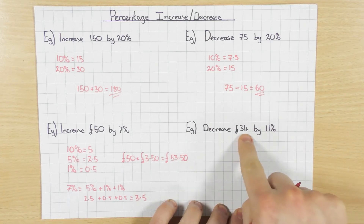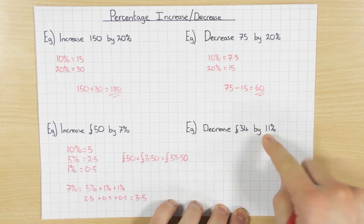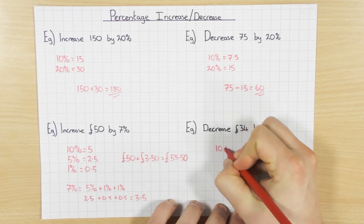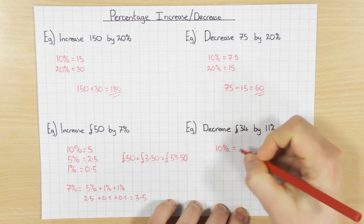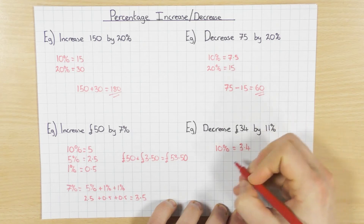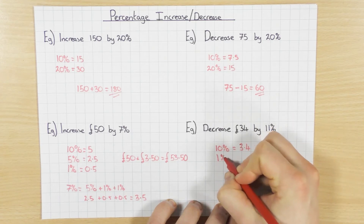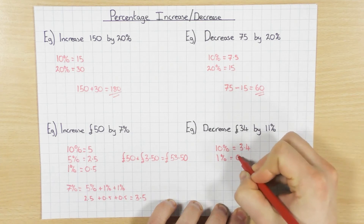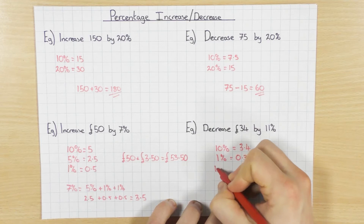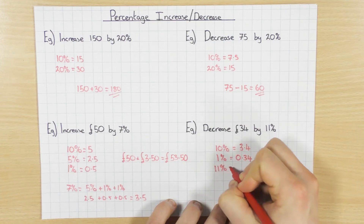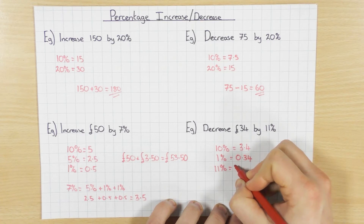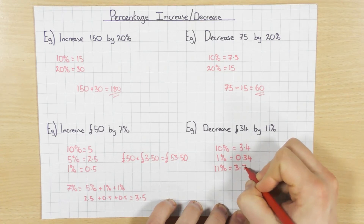Next one — this time I'm going to decrease £34 by 11%. So we need to find out what 11% is. I'm going to break it up: 10% of 34 is 3.4, and 1% divided by 100 is 0.34. So 11% will be adding these two together, which gives me 3.74.